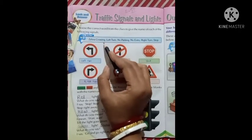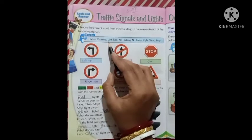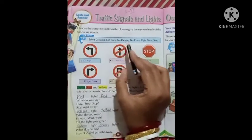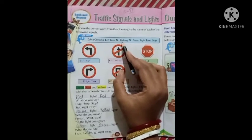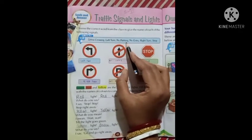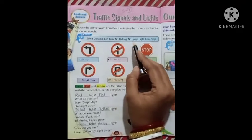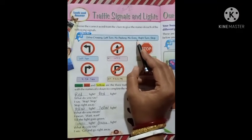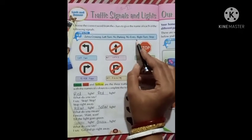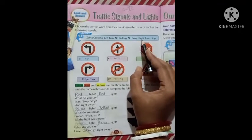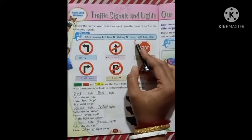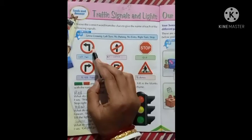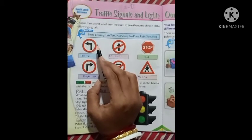The vocabulary words are: left turn, no parking, no entry, right turn, and stop.